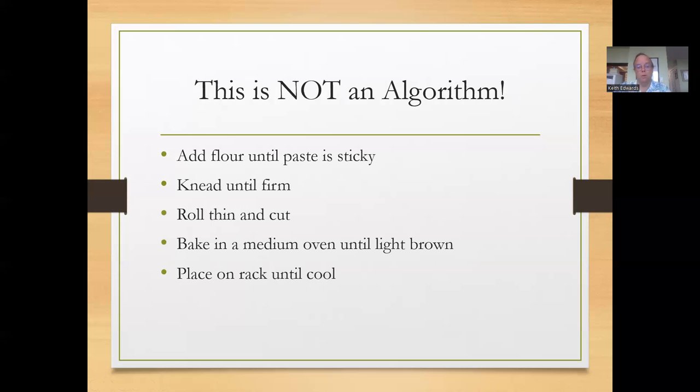So this is not an algorithm. So here we have a recipe, we're going to add flour until the paste is sticky, we're going to knead until it's firm, roll it out until it's thin and cut it, bake in a medium oven until light brown, and then we're going to place it on a rack until it's cool. This could be a portion of a bread recipe.